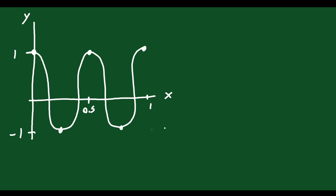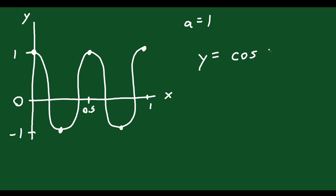We have a maximum value of 1 and a minimum value of negative 1. The axis is at 0, because that's equally far away from the top and the bottom. The amplitude is going to be 1, since you go up 1 to the top and down 1 to the bottom. The graph starts from the top, goes down, and then comes back up — that looks like a cosine function, since cosine always starts from the top, goes down, and comes back up. So we can say y equals cosine, which keeps it easy.